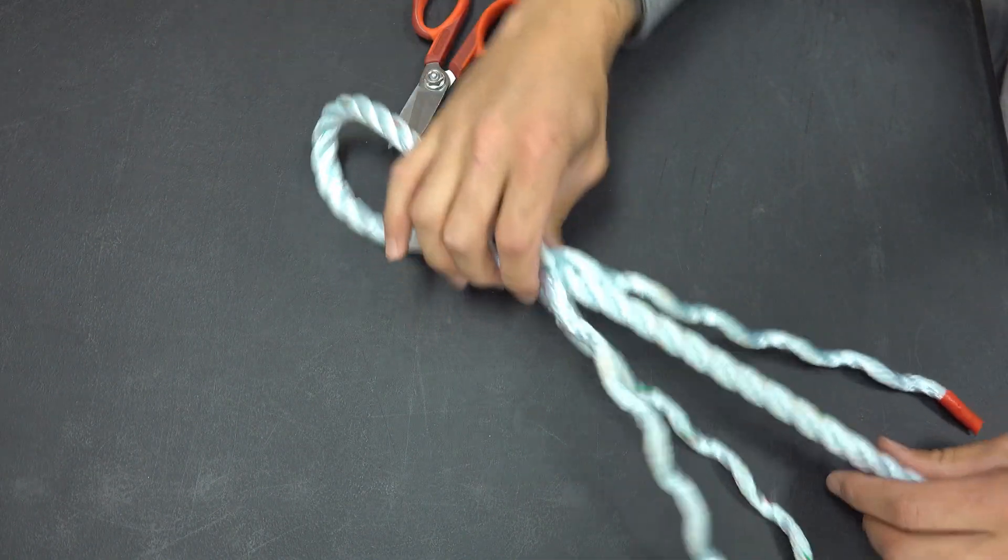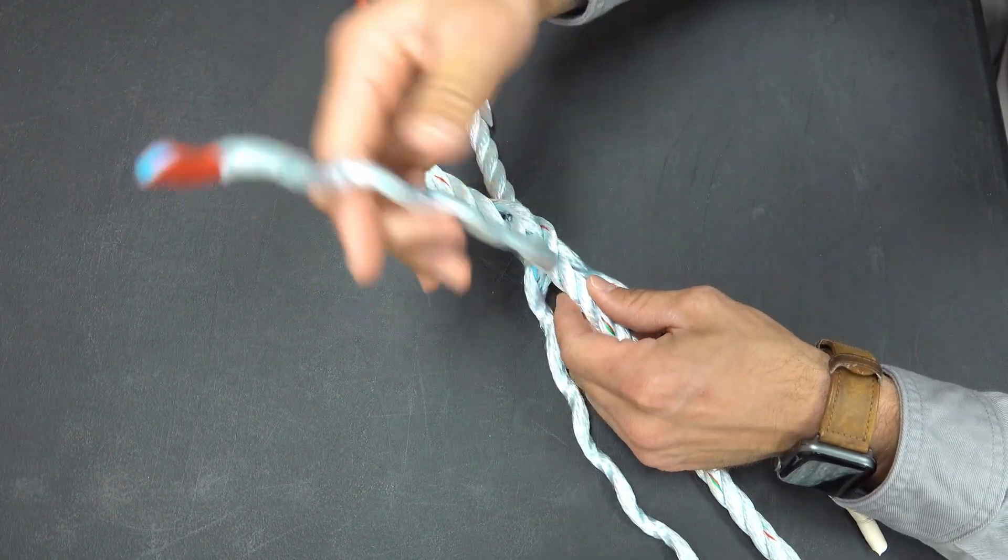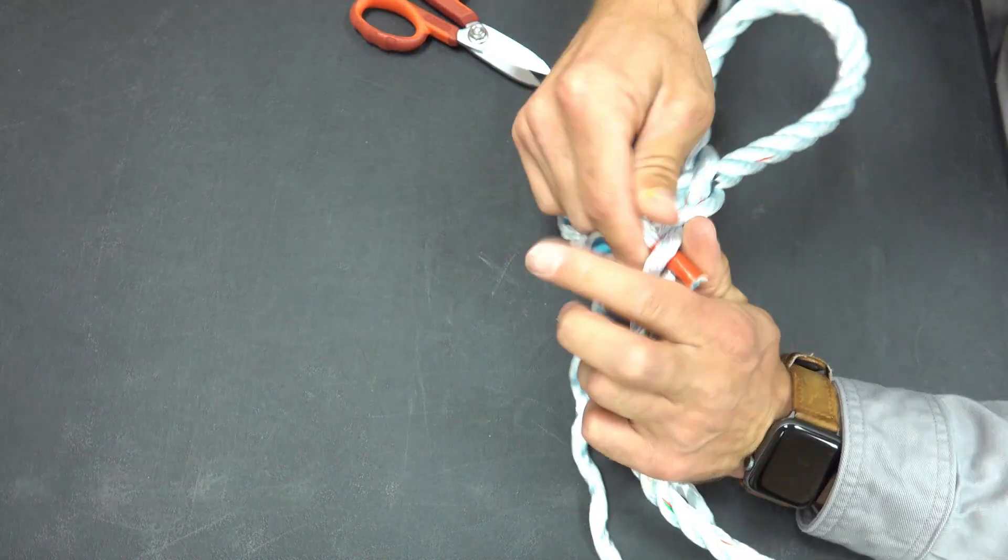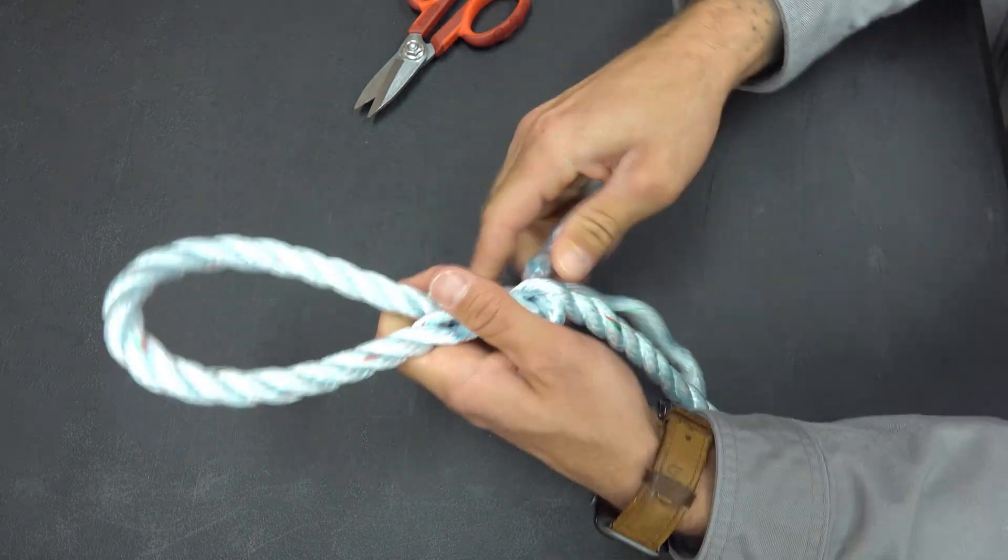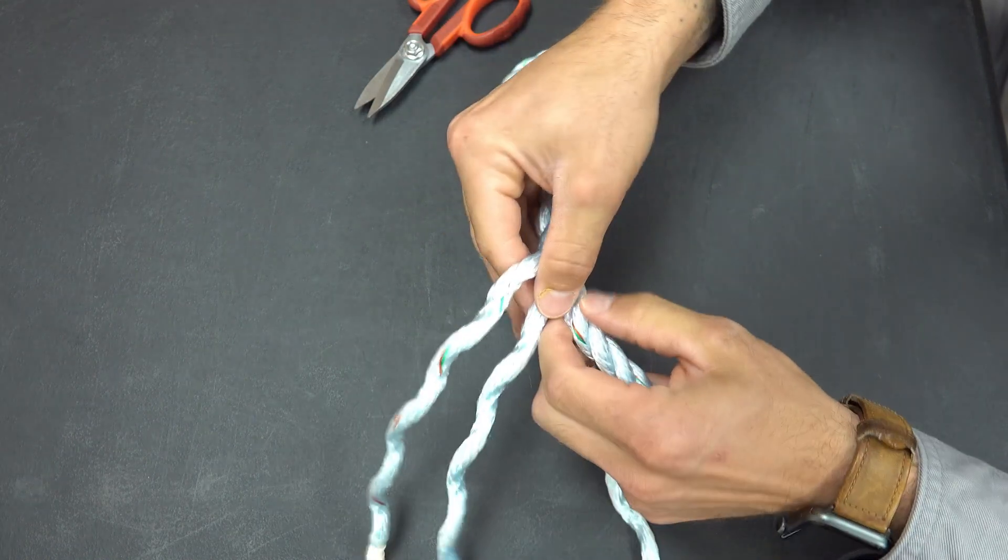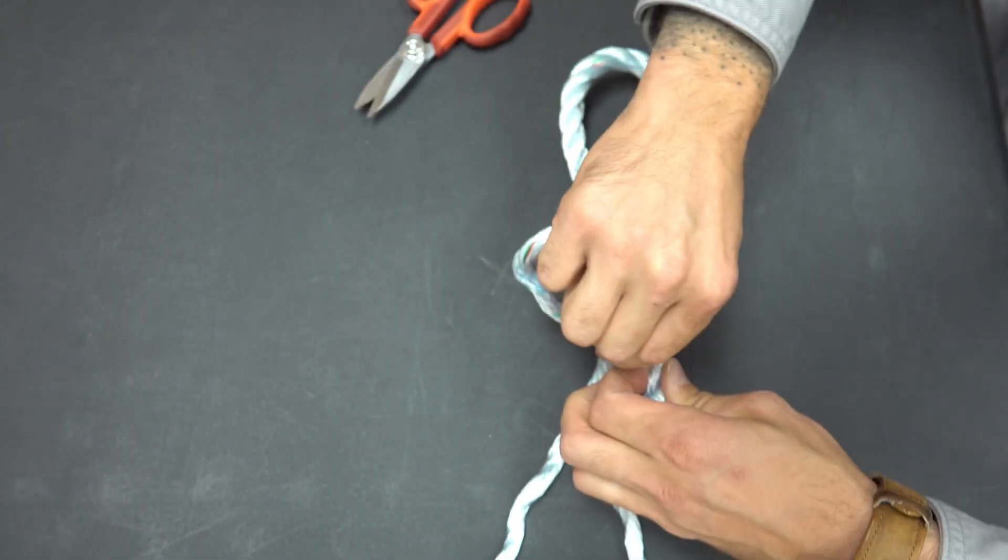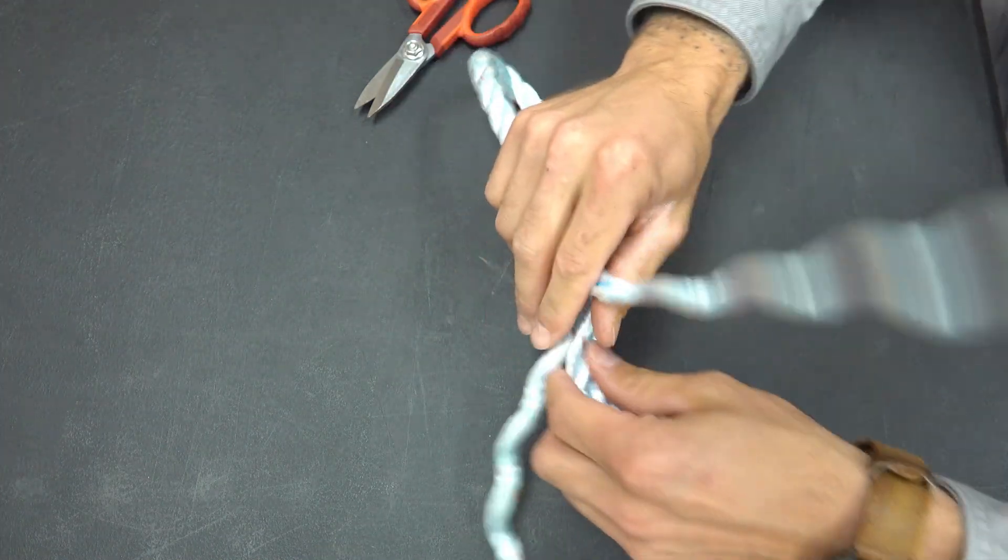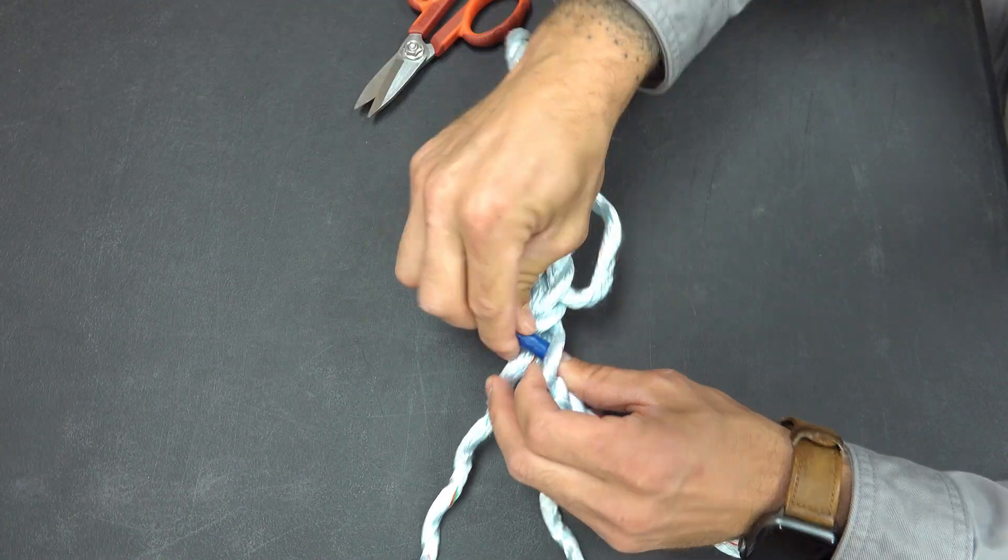So now we're going to repeat process one through number three, starting with the red one. I'm going to go over the strand and under, and dressing as I go. Repeating the process again with my white strand with the tape mark, over and under. My blue, over this strand and under.